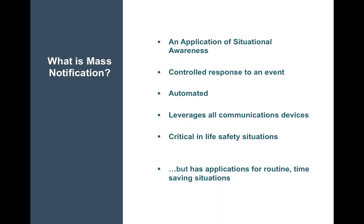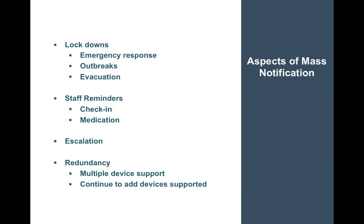Perhaps we can look at some of the real-world applications of mass notification. Obviously we think about emergency situations where there's lockdown and emergency response needs to be taken into consideration. We want to make sure that it's a calm response — first the staff is notified, then the residents, and in certain cases outside agencies or family members. Different media can be used when sending out this information. A lockdown could be an emergency situation, an outbreak on a certain wing or floor, or a full-on evacuation.